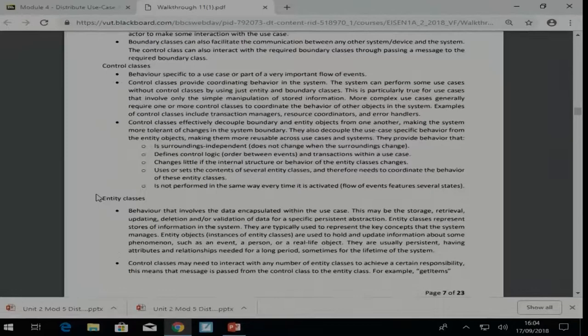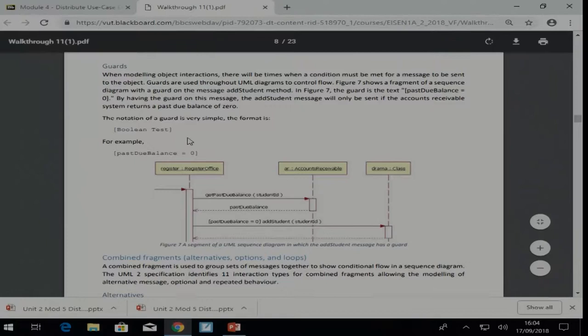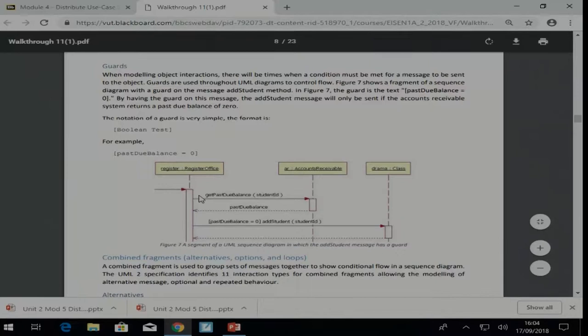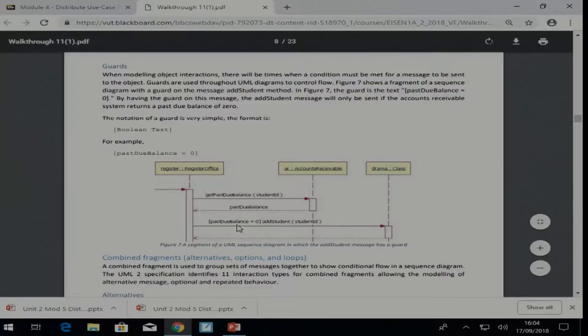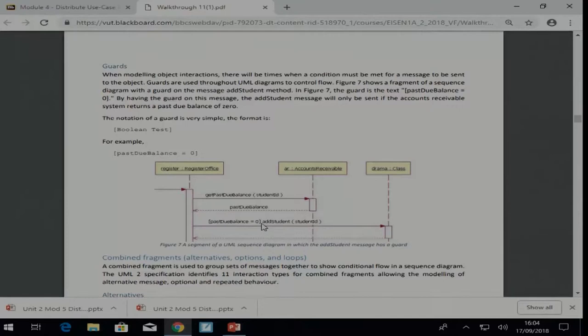Okay, but we'll look at that now also. Then we can also identify some guard conditions on the actual messages. So for example here we have add student, so there's a guard condition which says the past due balance is equal to zero. So the condition for adding a student means that your balance must be zero, meaning that you should not owe anything.